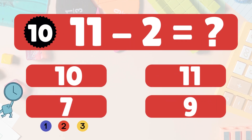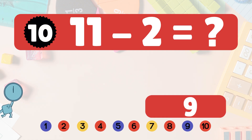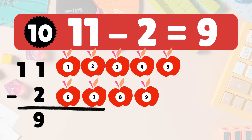Wow, you're a math star! Next, 11 minus 2 equals what? 11 minus 2 is 9. Here we have 11 apples. Take 2 away — 9 apples left: 1, 2, 3, 4, 5, 6, 7, 8, 9. So 11 minus 2 is 9. You're on fire!